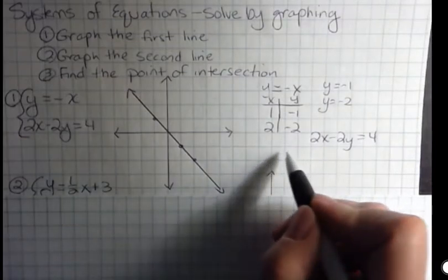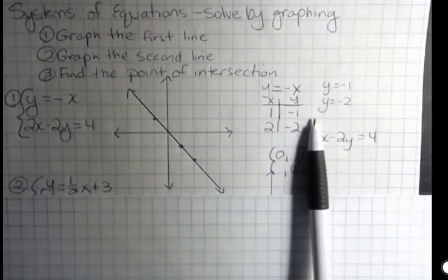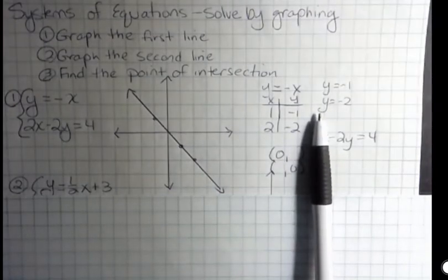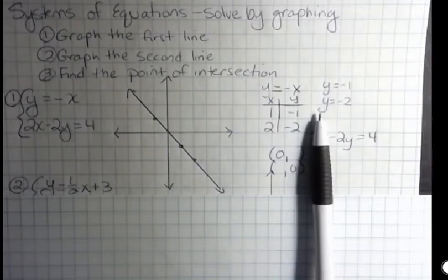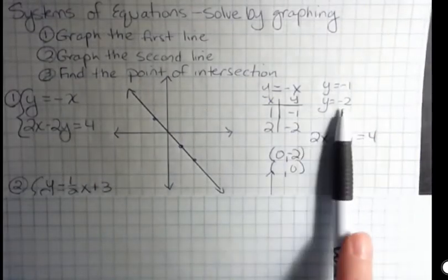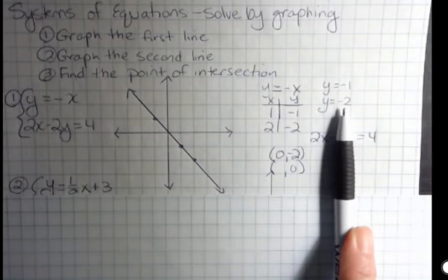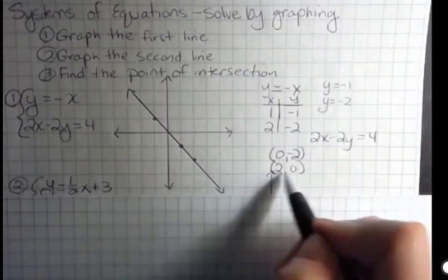And so what I'm going to do here, I'm going to solve by finding the intercepts. So I'm saying what if x is 0 and what if y is 0? And I'm going to use the cover up method. So I'm going to say if x is 0, cover that up, what would y be? Well, if I divide both sides by negative 2, I get 4 divided by negative 2 is negative 2. So if x is 0, y is negative 2. Then I'm going to cover this one up and say what if y is 0? Then I get 2x equals 4, divide both sides by 2, and I get x equals 2.